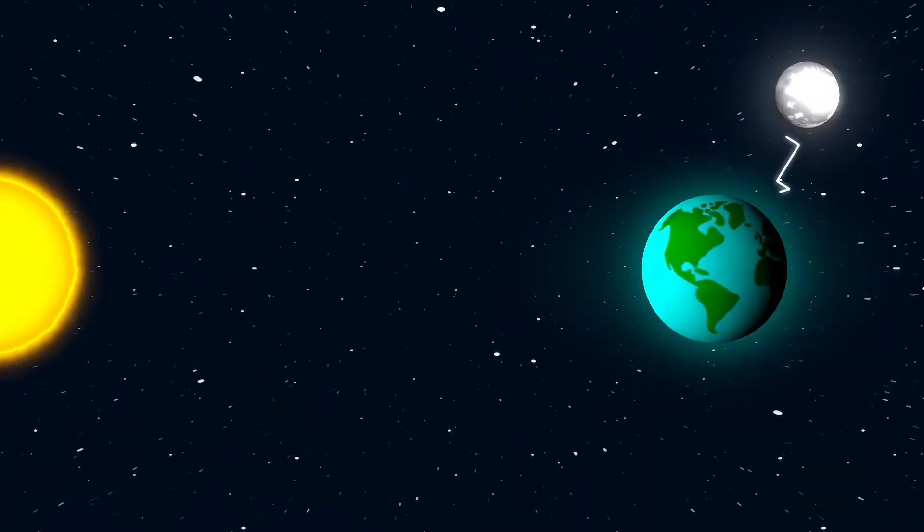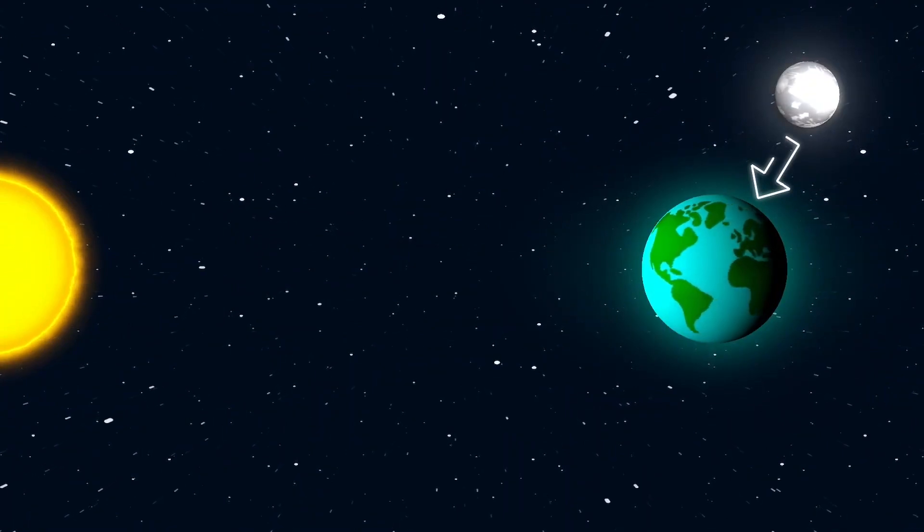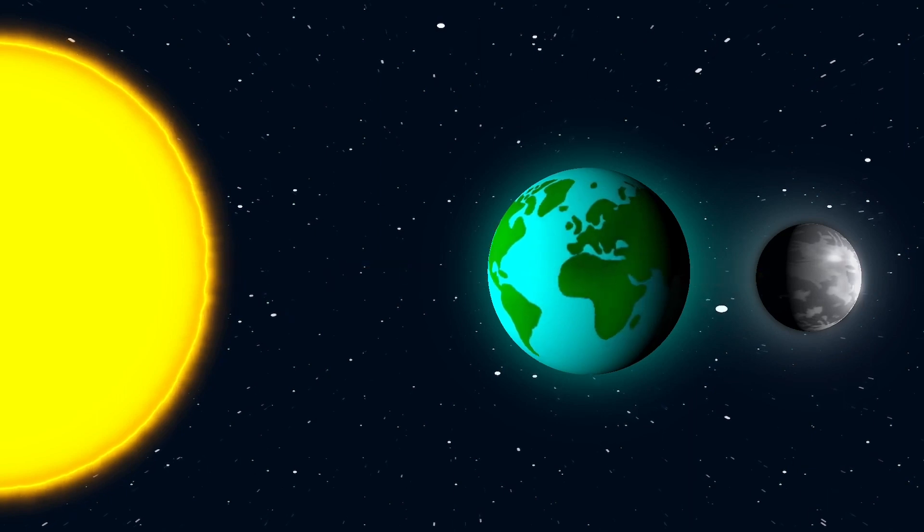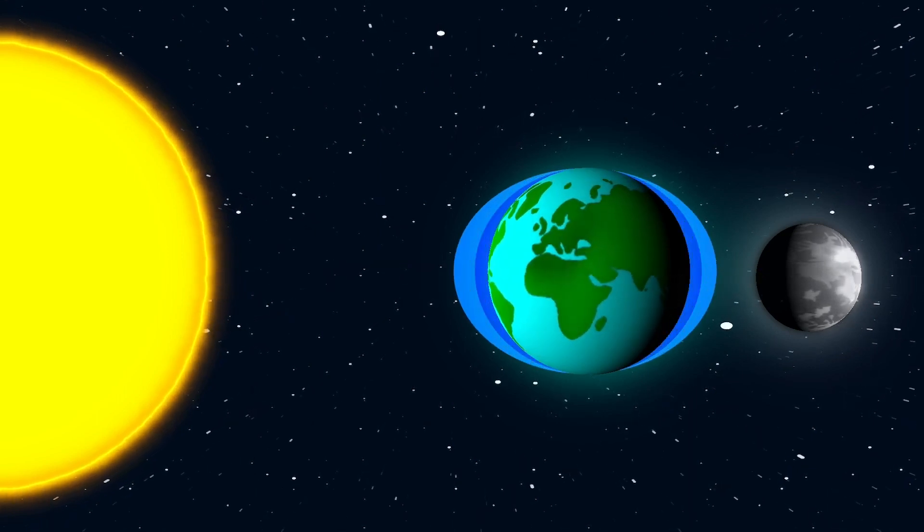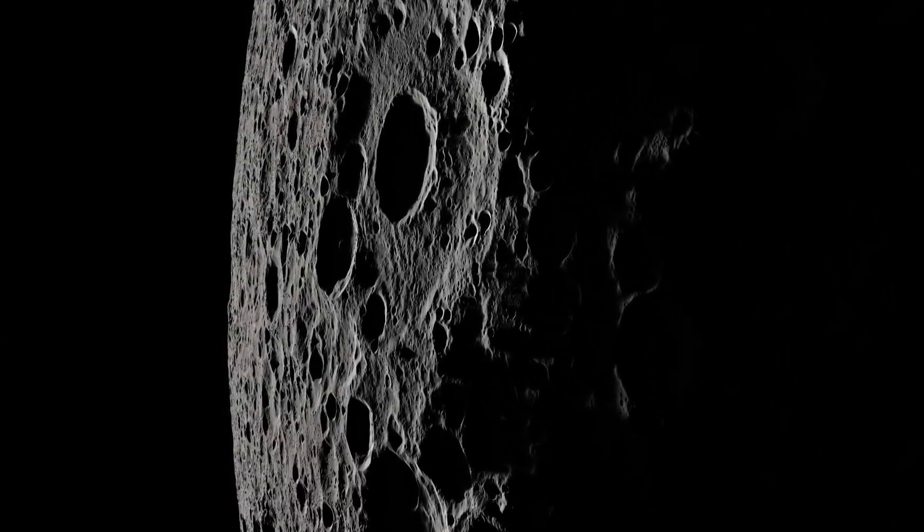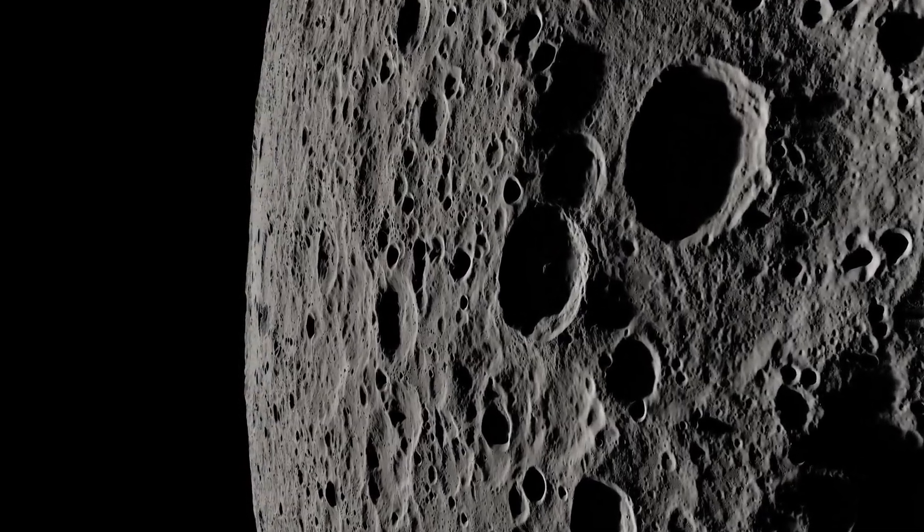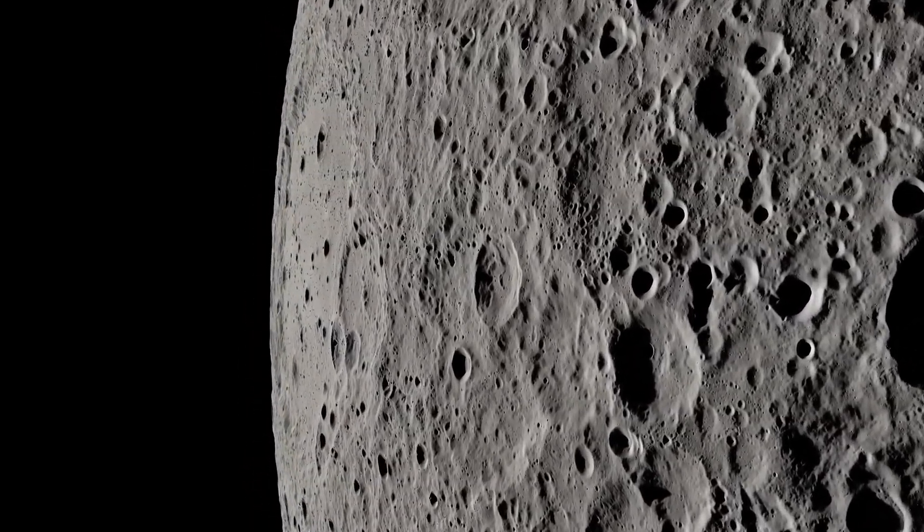The stabilizing effect of the Moon on Earth's axial tilt has likely been crucial for the development of complex life. Without this stability, Earth might have experienced wildly varying climates that would have made it difficult for life to evolve and thrive. As the Moon continues to retreat, these stabilizing influences will gradually diminish. While this won't lead to immediate catastrophic changes, it underscores the delicate balance that has allowed life to flourish on our planet.